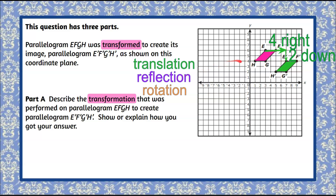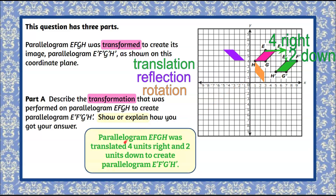A reflection would flip it and change the orientation, and a rotation would turn it and change the orientation. So we need to show or explain — let's explain our work. Parallelogram EFGH was translated 4 units right and 2 units down to create parallelogram E'F'G'H'. And that's our explanation.